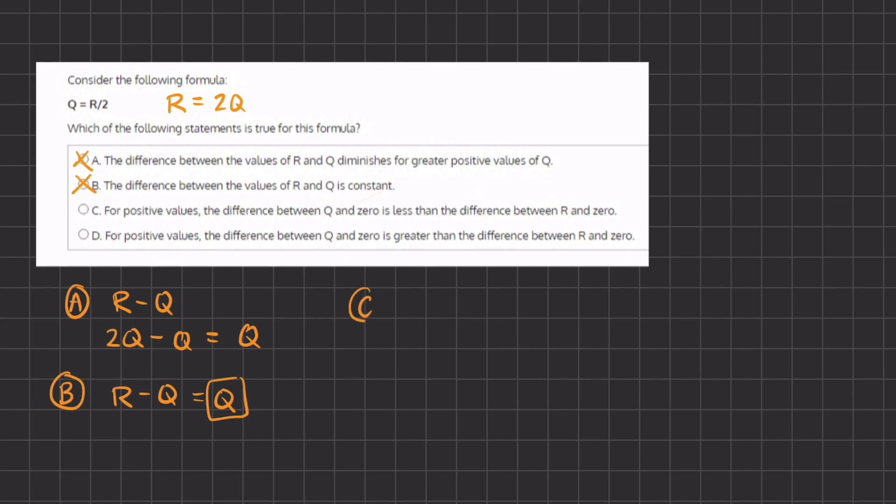Now let's take a look at option C. For positive values, the difference between Q and 0 is less than the difference between R and 0.